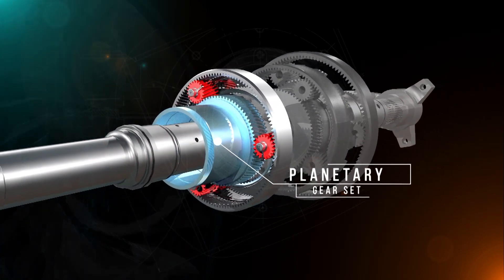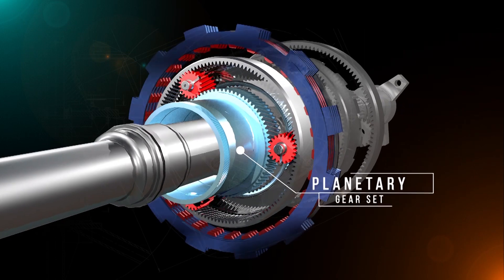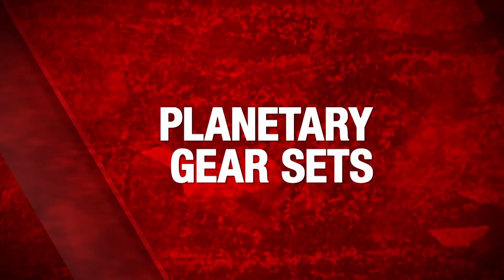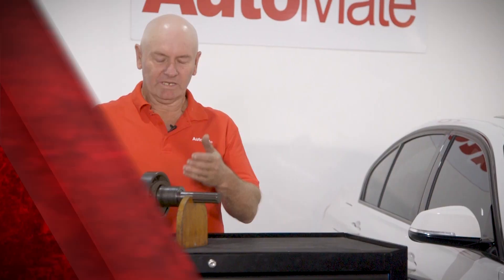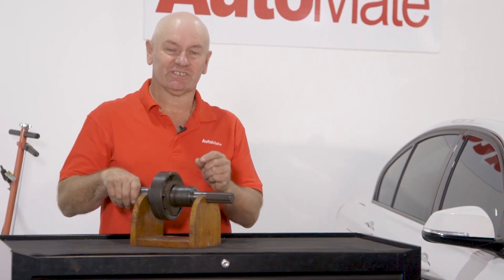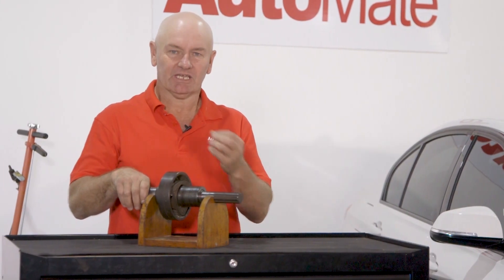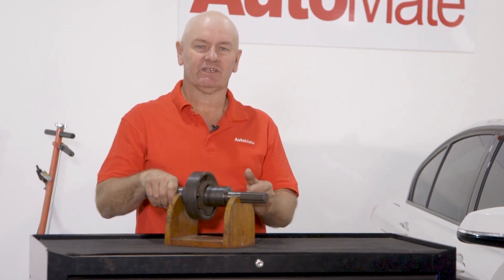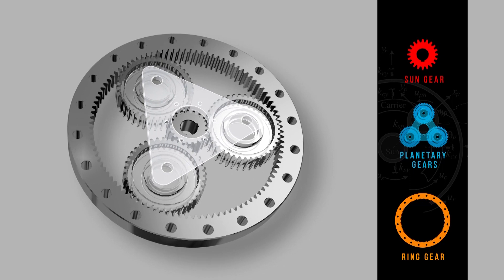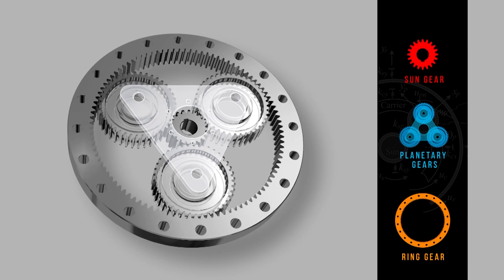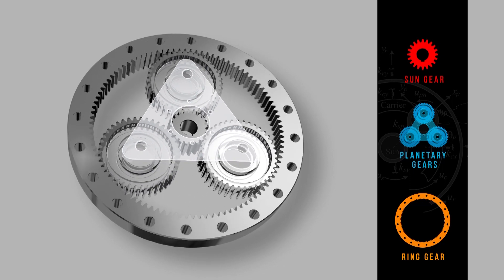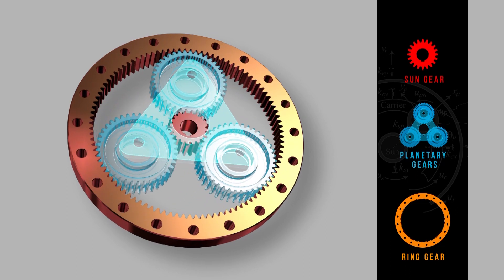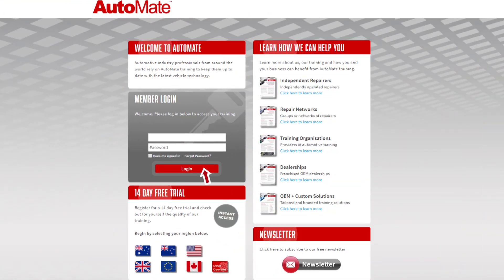Surrounding the gear sets are brake bands and/or clutch packs. Planetary gear sets are the means by which the transmission is able to change gear ratios without disengaging drive from the crankshaft. In its most simple form, a planetary gear set comprises a ring gear, planet carrier and pinions, and a sun gear.